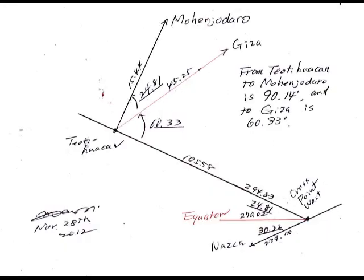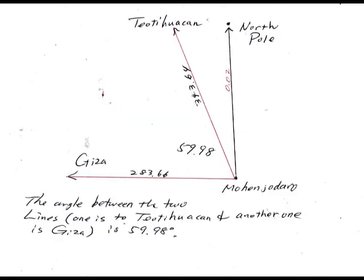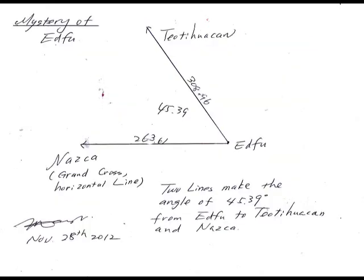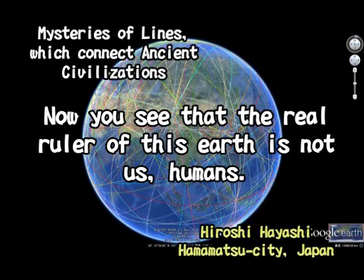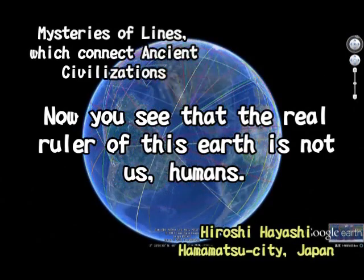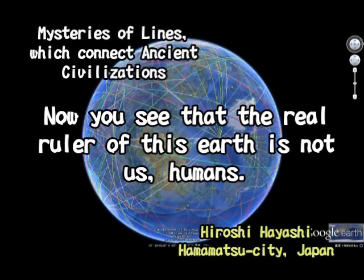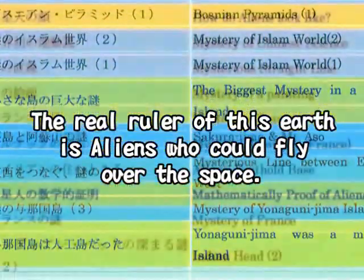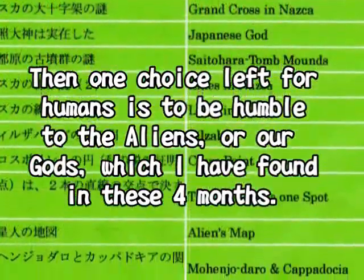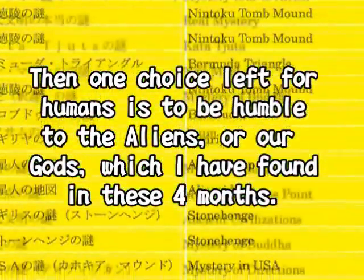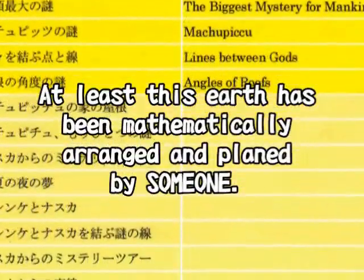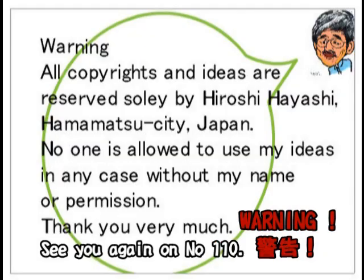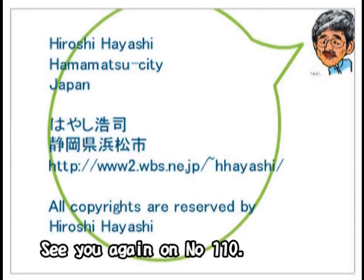This is the end of the story. I hope you understand that the rulers of this earth are not us humans, but the aliens, or someone whom we may call God. If you can't agree with me, would you please see this video again and think things by yourself? Do you still think that humans are the rulers of this earth? I don't think so. This earth has been very much mathematically arranged — but by whom? See you again on video number 110.